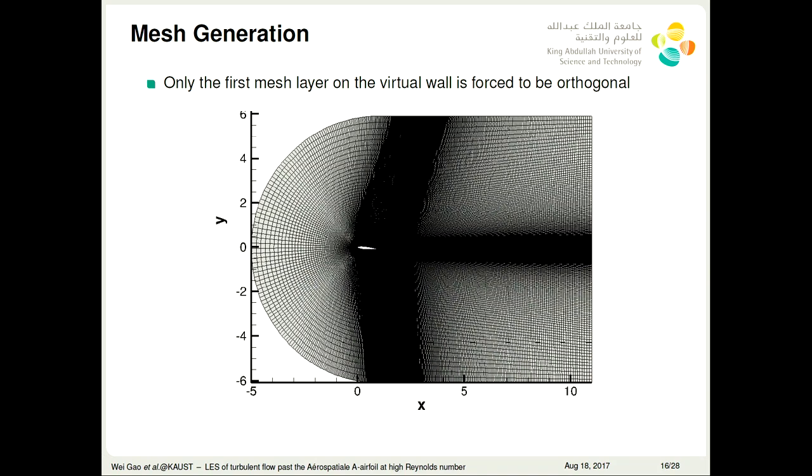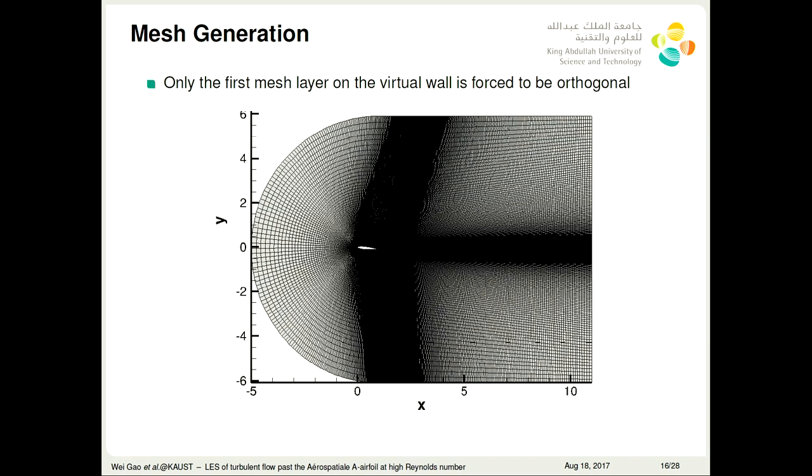This mesh is generated by the software Pointwise. Only the first mesh layer on the virtual wall is forced to be orthogonal. We have to verify and validate our wall model LES code. The verification is using the NACA0012 airfoil, Reynolds number 10,000, attack angle 5 degrees. The wall normal units is about 14, and then we compare our wall model LES results with the DNS results. The validation is the Aerospatiale A airfoil, Reynolds number 2.1 million, and attack angle 13.3 degrees. The wall normal units is about 21.